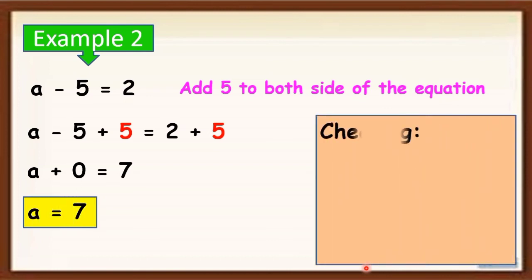To check your answer, let's substitute 7 to the given equation, which is A minus 5 is equal to 2. So 7 minus 5 is equal to 2. 2 is equal to 2.